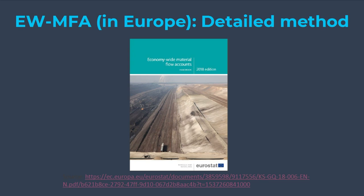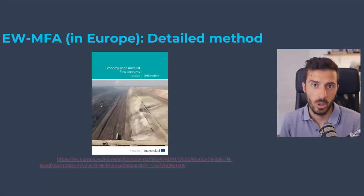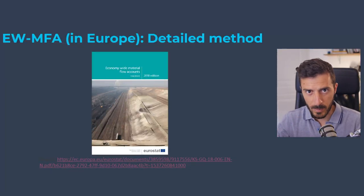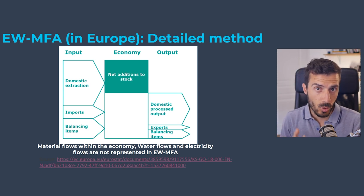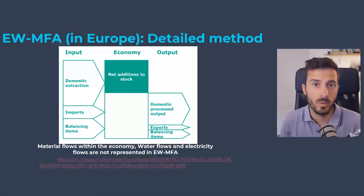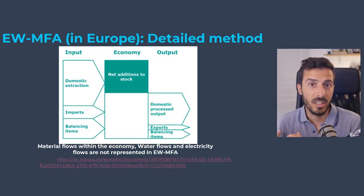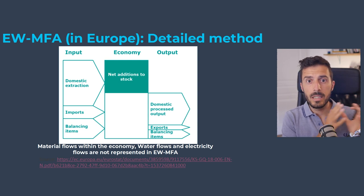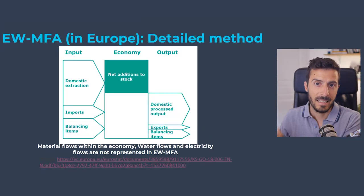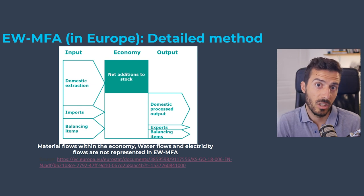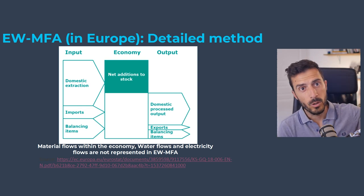So this is what the economy-wide material flow accounting handbook — the 2018 version — looks like. You can go to this website, and what it tells you is that it looks at the interaction between the economy and the environment or the rest of the world economy. You can separate three elements here: things that enter your economy, things that stay in your economy, and things that exit your economy. What enters your economy is what you can extract locally from your territory — sand, biomass, and many other things.